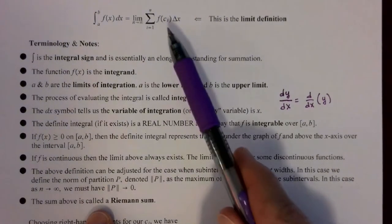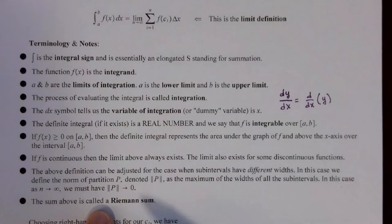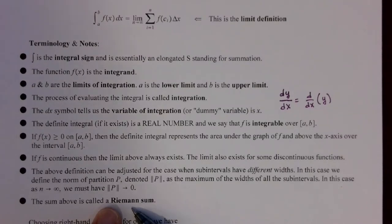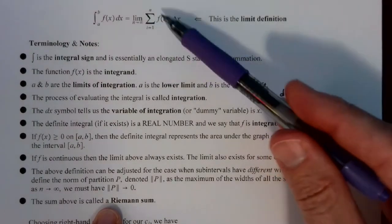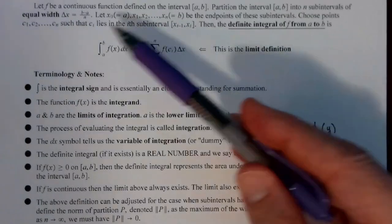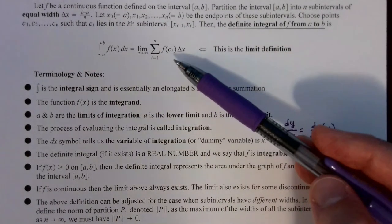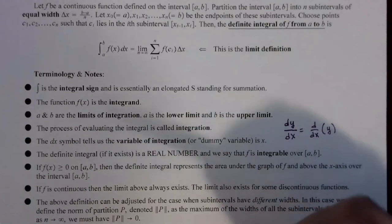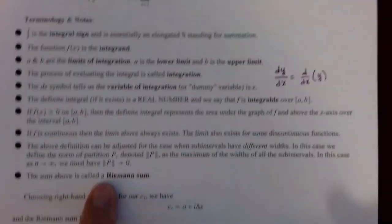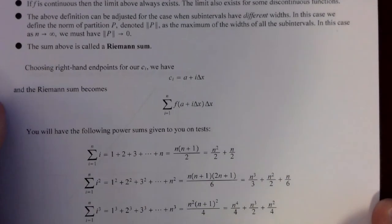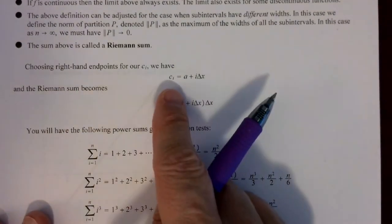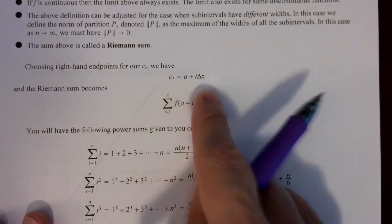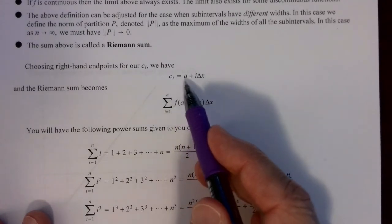The sum before we take the limit is called a Riemann sum, named after a mathematician who did essential work in this area. The Riemann sum can be a right-hand, left-hand, or midpoint sum depending on how you choose the ci's — or it could be something totally different since you can choose endpoints randomly. When we do the actual work, we'll typically choose right-hand endpoints to make it easy.